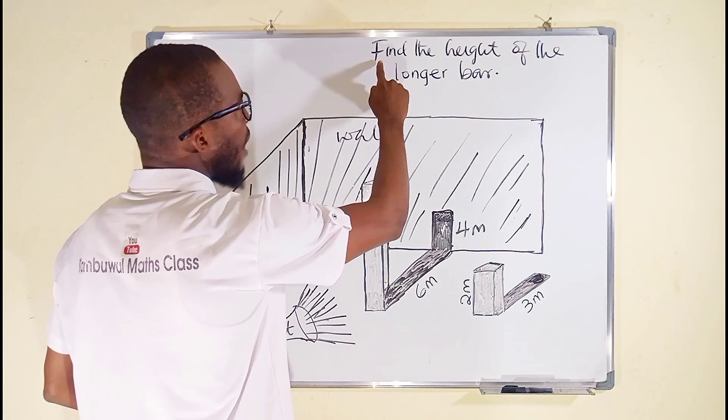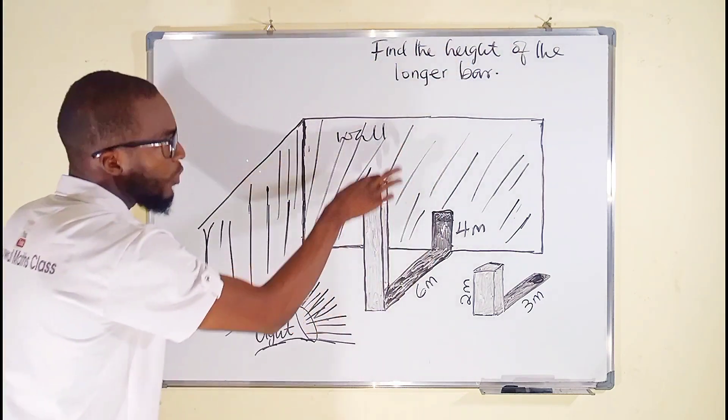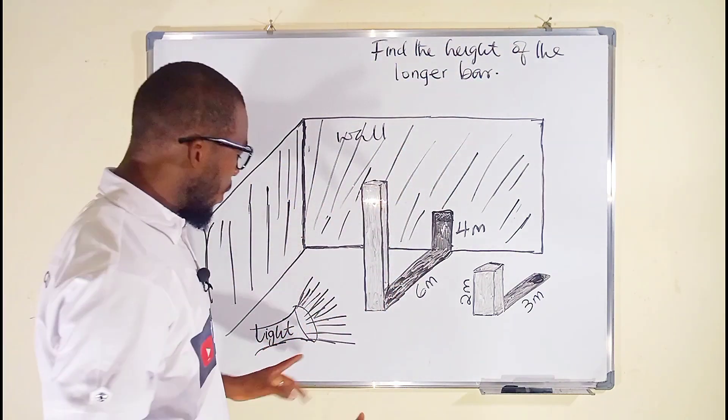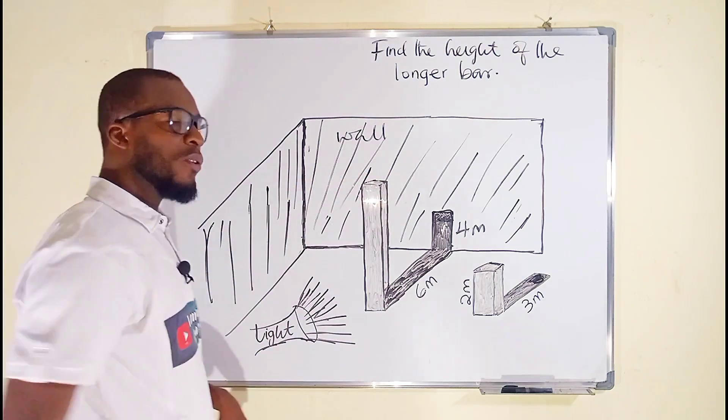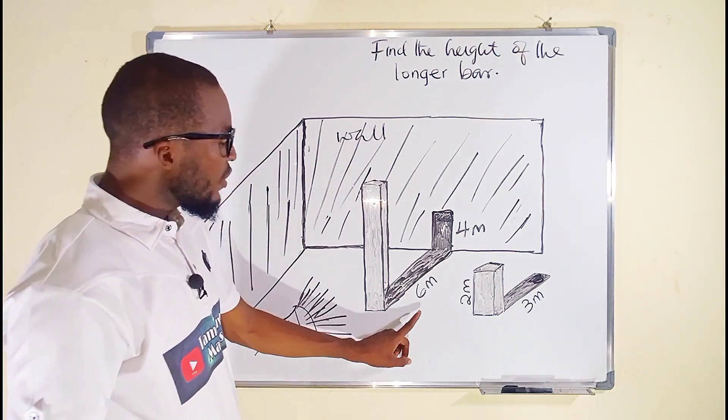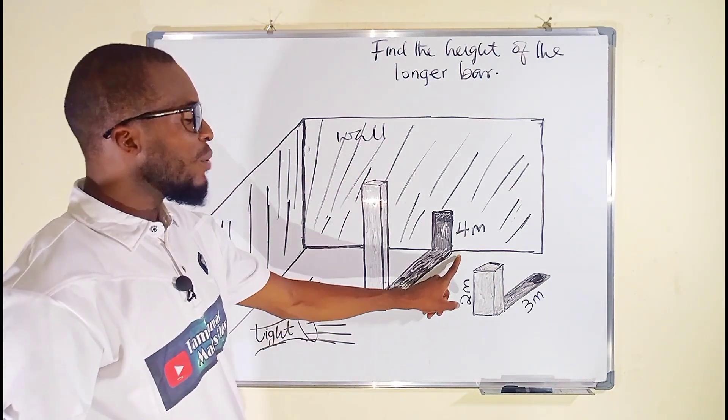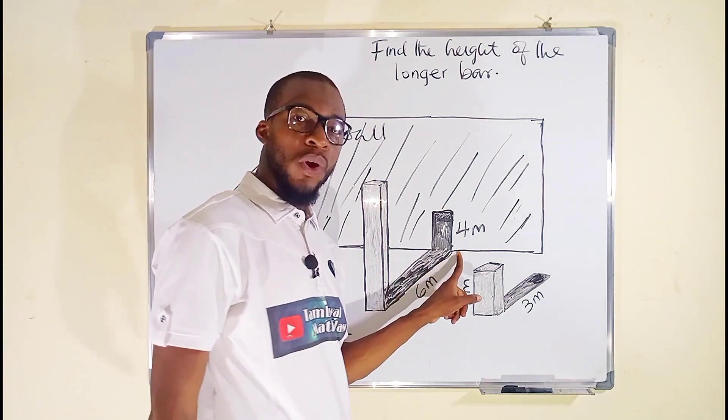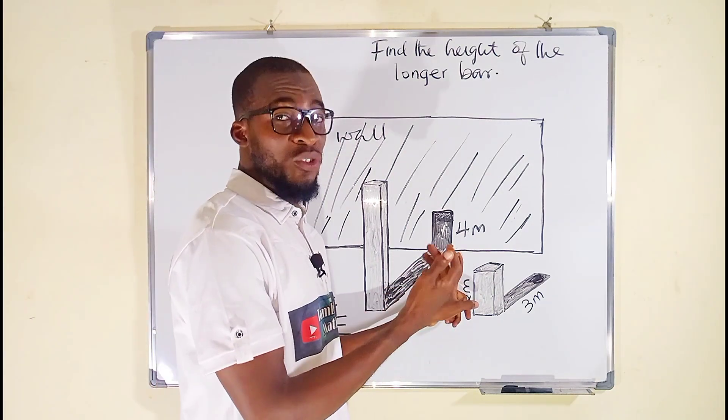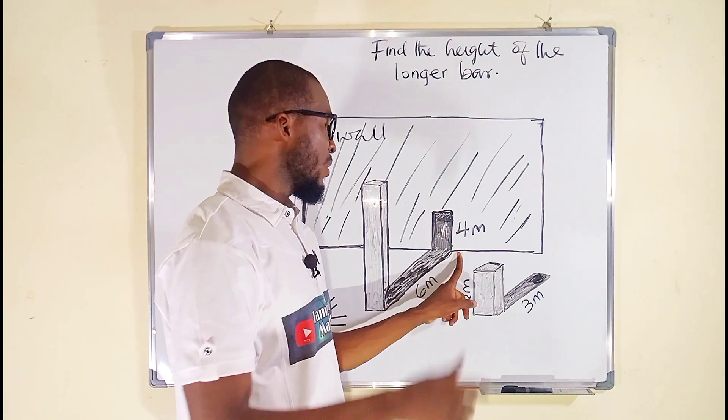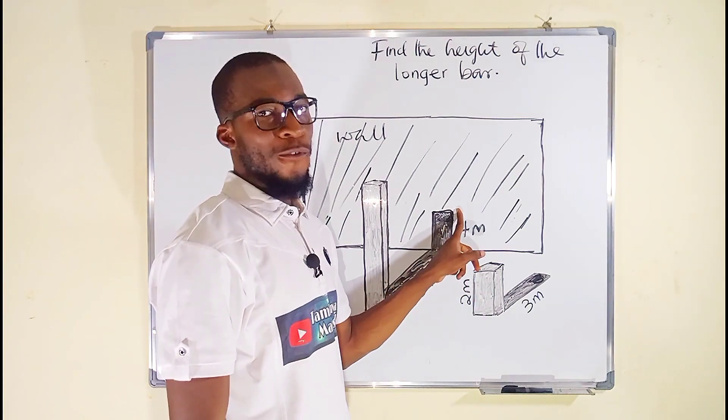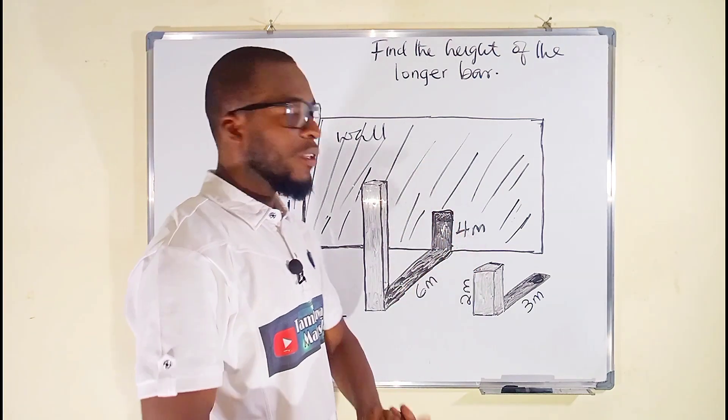But look at this question. It asks us to find the height of the longer bar, which we don't know. But after casting a light on this longer bar, it produces a shadow of six meters before hitting the vertical wall. And the rest of the shadow, which is going to take turn vertically, produces four meters towards the vertical wall.